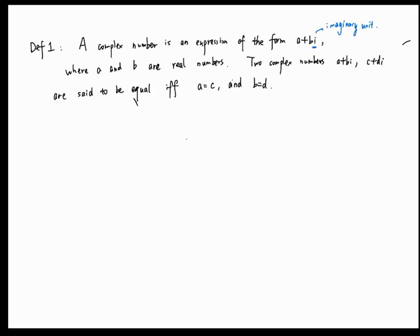if and only if A equals C and B equals D. And we write it as A plus B I equals C plus D I. So this is the definition of complex numbers.